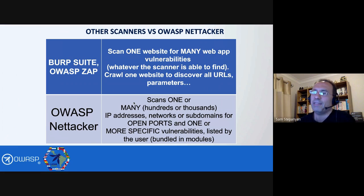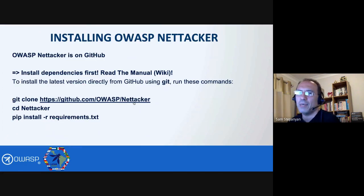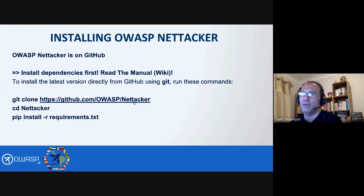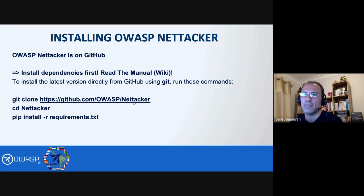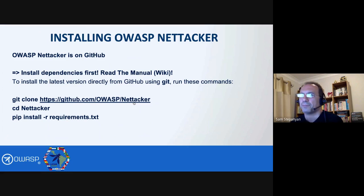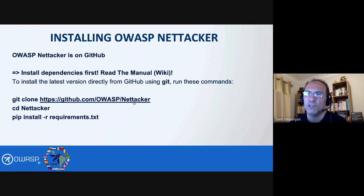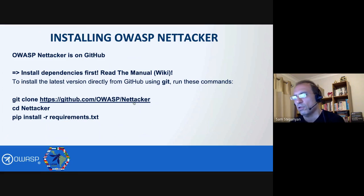This is why it's called Nettacker, or Network Attacker — it is there to attack your network before the bad guys do. Installing OWASP Nettacker is a little outside the scope of this presentation, but it's relatively easily done. Nettacker is on GitHub as a Python project. Please make sure you read the manual on the wiki and install the OS-level dependencies first, because there are several libraries Nettacker needs before you can install the Python dependencies. You can then install Nettacker by running a git clone command, changing into the Nettacker folder, and running pip install -r requirements.txt.